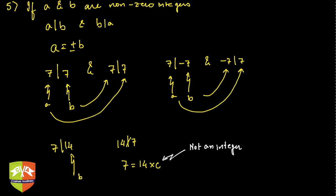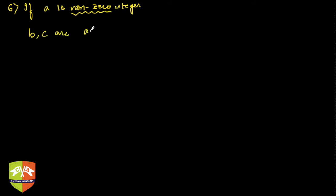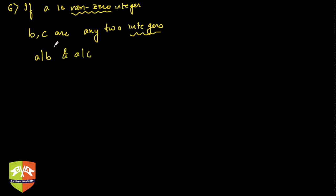This was property number five — please remember these properties. Now let's talk about property number six. Property number six says: if a is a non-zero integer and b and c are any two integers — and note we are talking only about integers — then if a divides b and a divides c, the following hold.